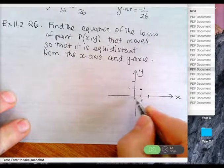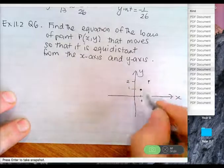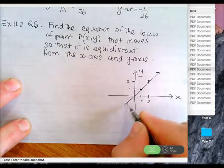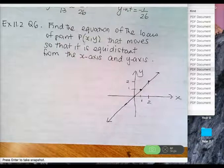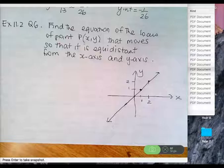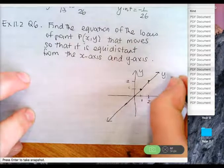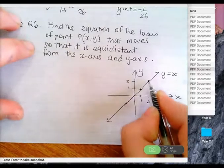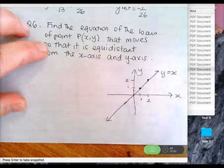The point (1, 1) is equidistant from the x and y-axis. What about (2, 2)? It's 2 units from there, 2 units from there. The next one is (3, 3). Down here — (negative 1, negative 1). Tell me the equation of that line. If x is equal to y at every single point, y equals x is the equation. Here's (1, 1), the x and y are equal. Here's (2, 2), the x and y are equal. The angle here is 45 degrees.